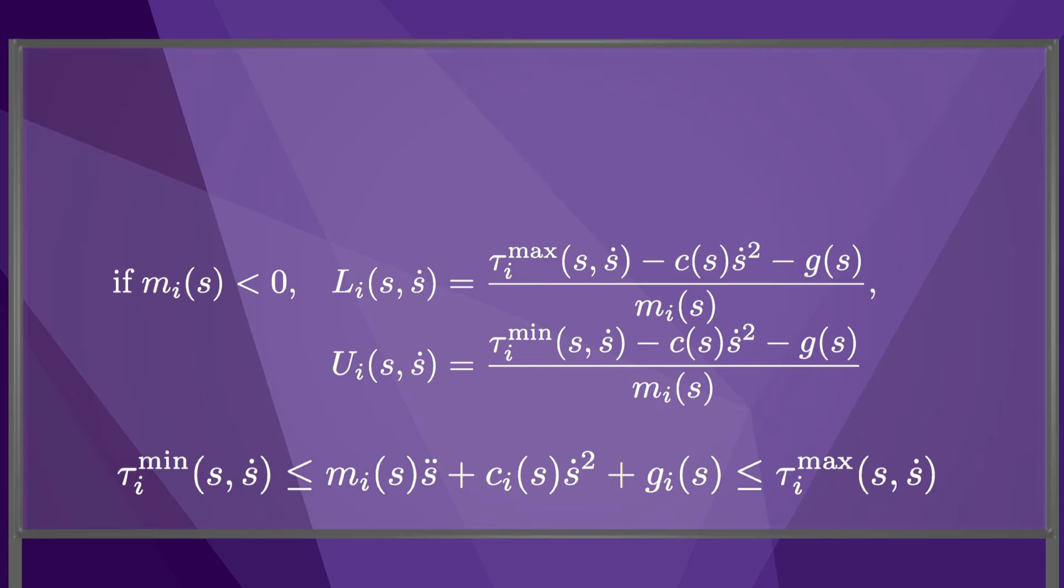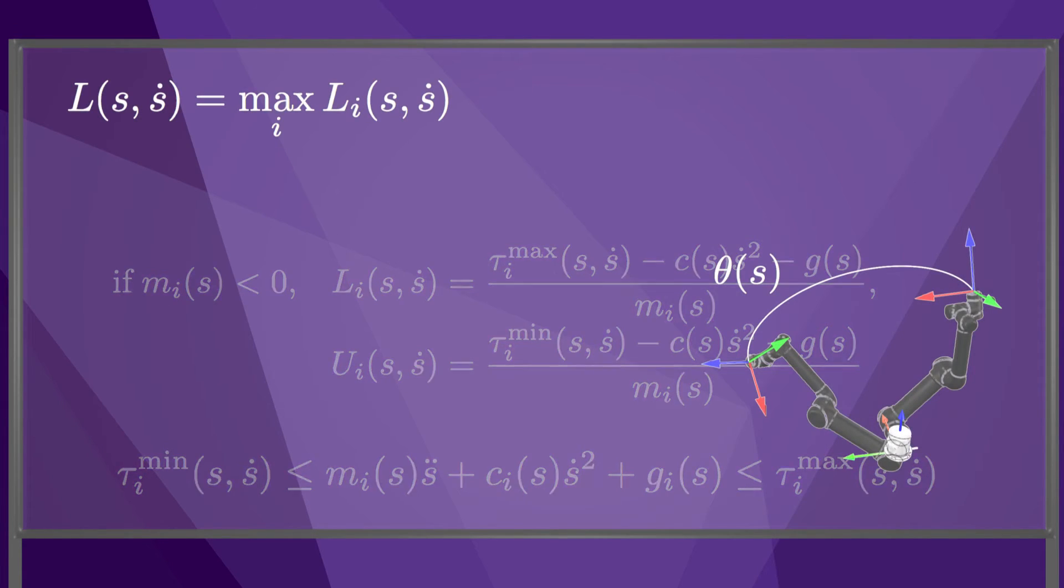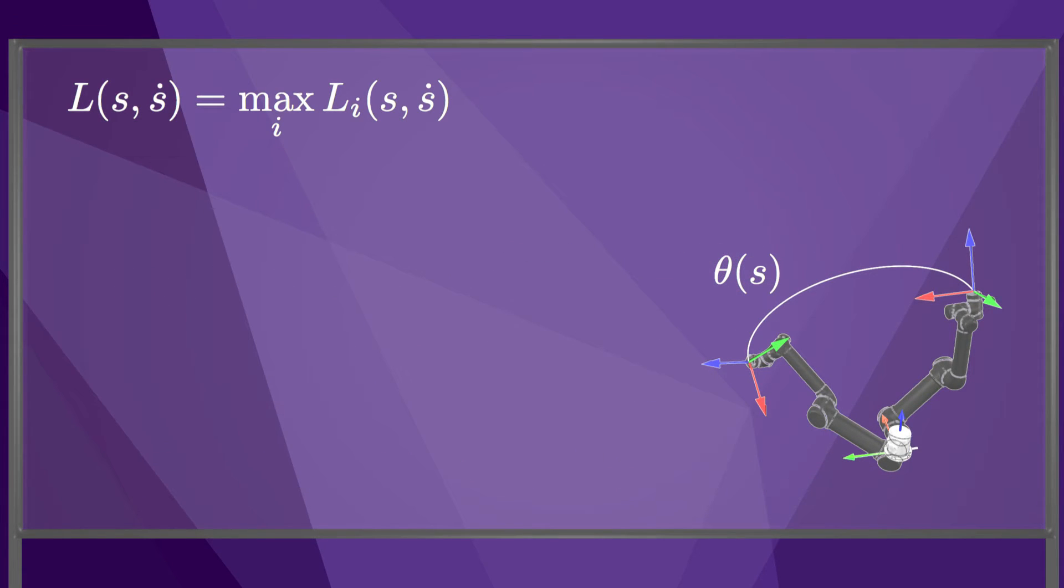If we calculate L_i and U_i for all the joints, then L(s, s dot), the minimum feasible acceleration s double dot at the state (s, s dot), is just the maximum of the lower limits over all the joints. Similarly, U(s, s dot), the maximum feasible acceleration s double dot, is just the minimum of the upper limits over all the joints.